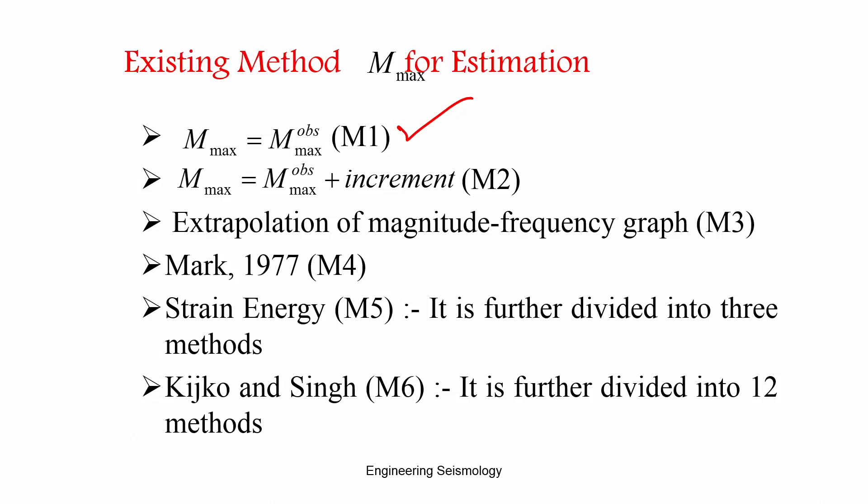Method 2 is taking the maximum observed magnitude and adding some increment. This increment depends upon the interest of the person and some relation with other parameters.